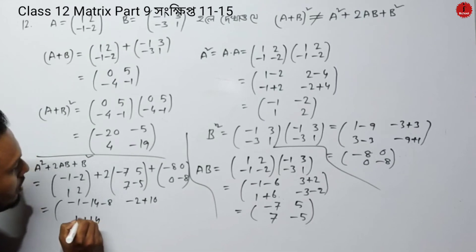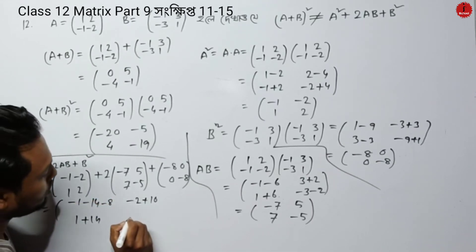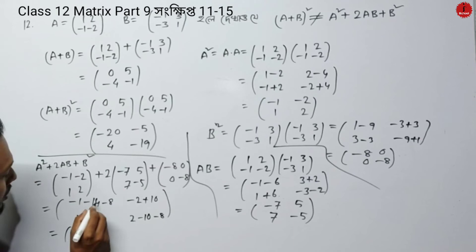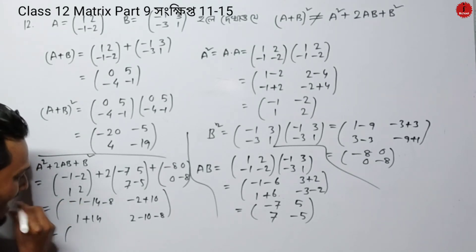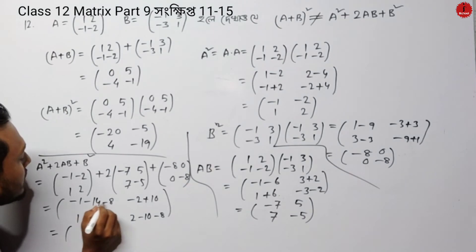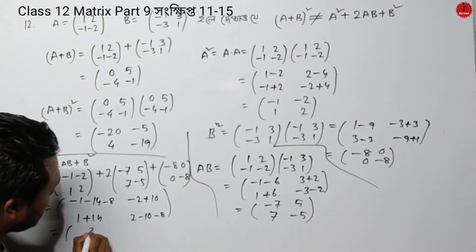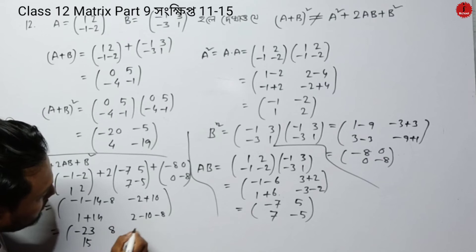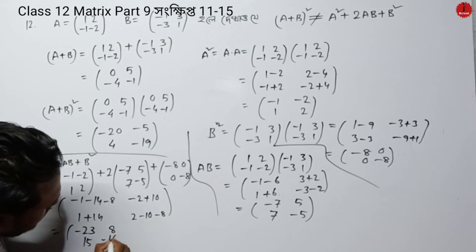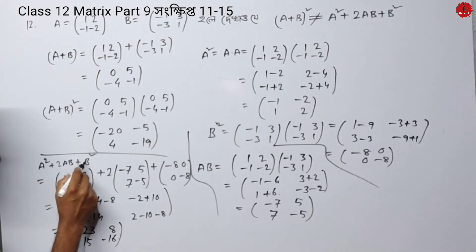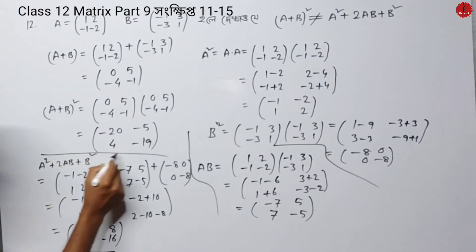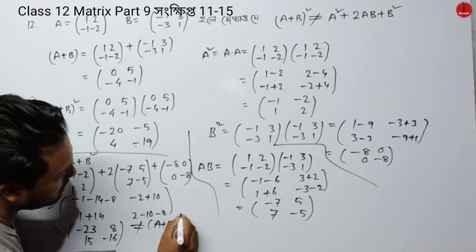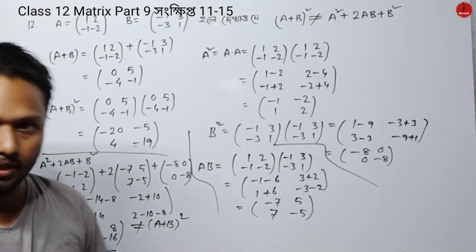So A² + 2AB + B² is not equal to (A+B)². This is because A times B does not equal B times A in general. Thus the expansion rule does not apply here as a standard algebraic identity.